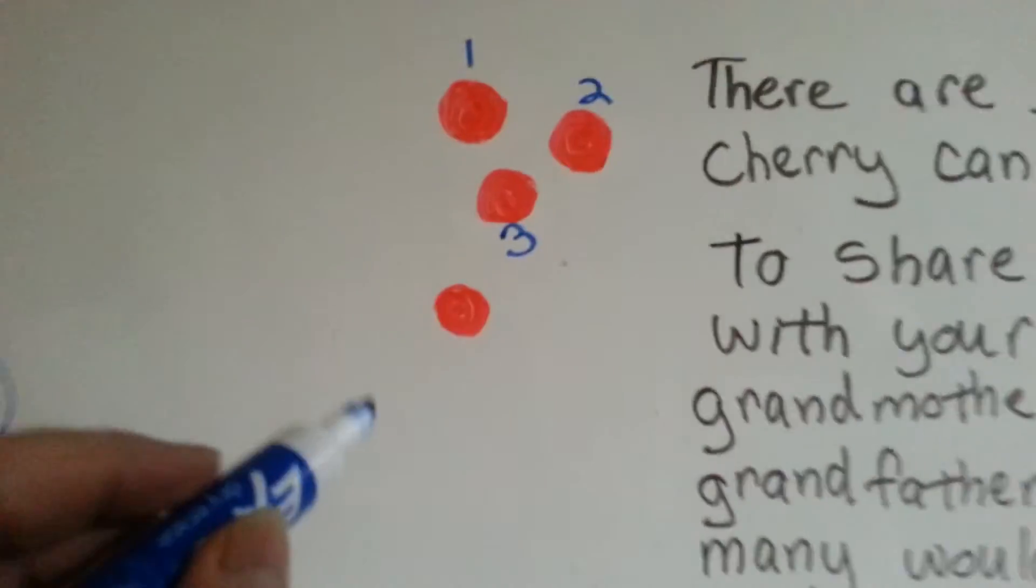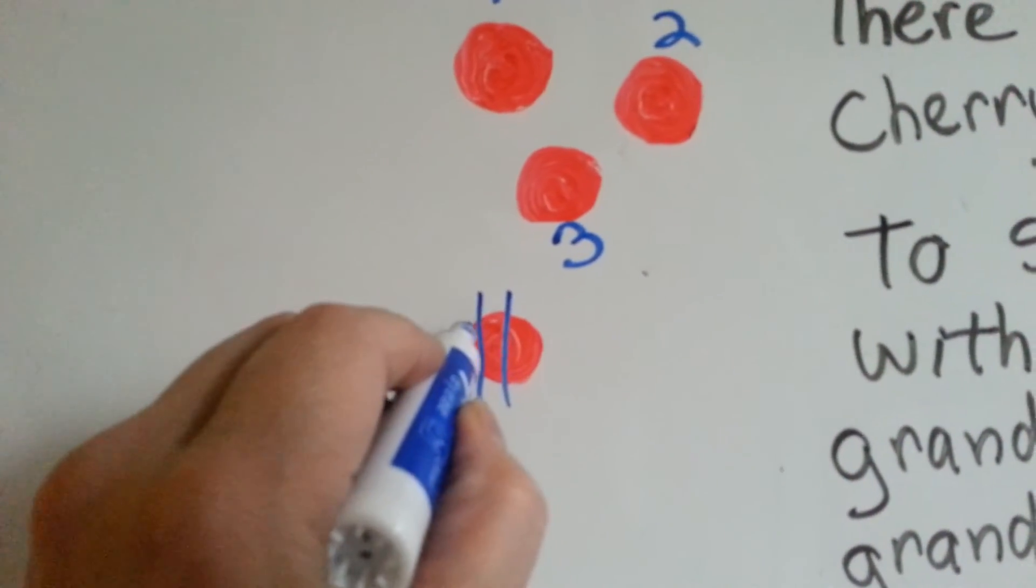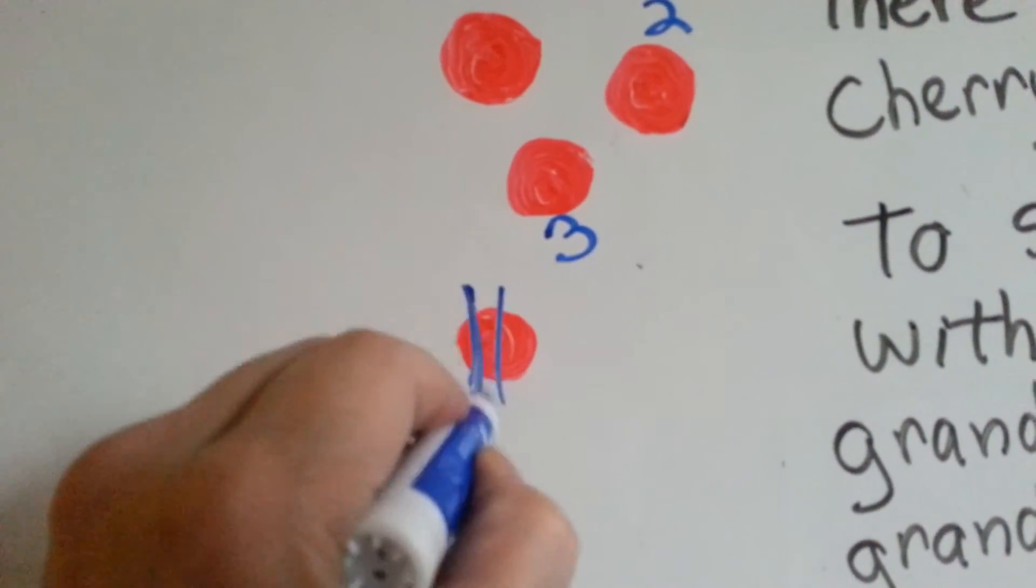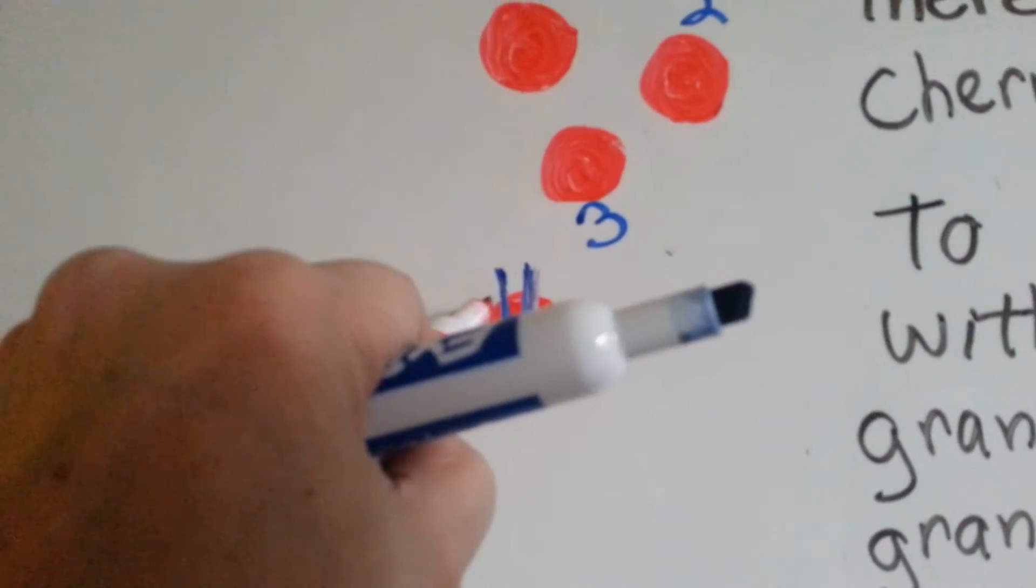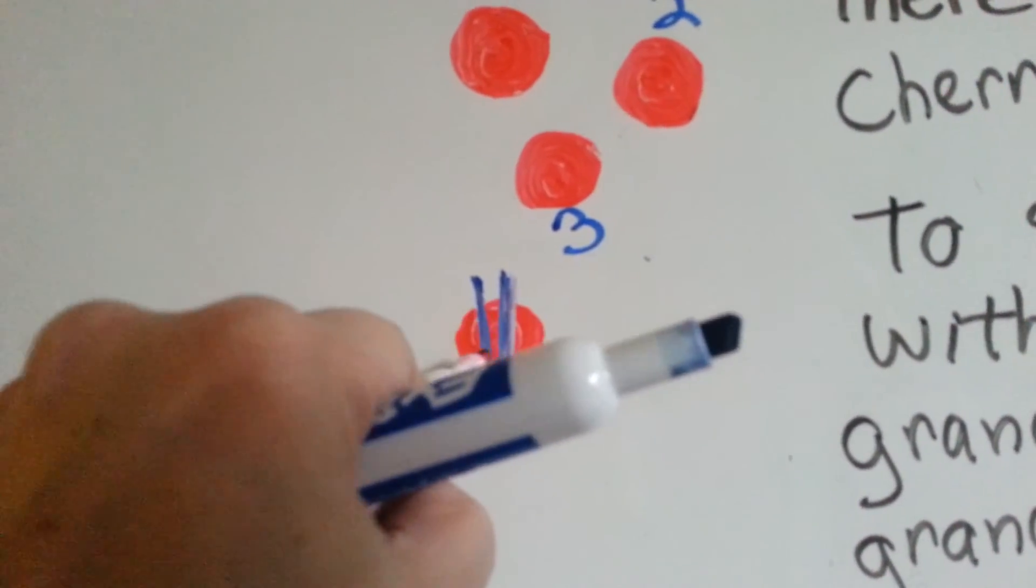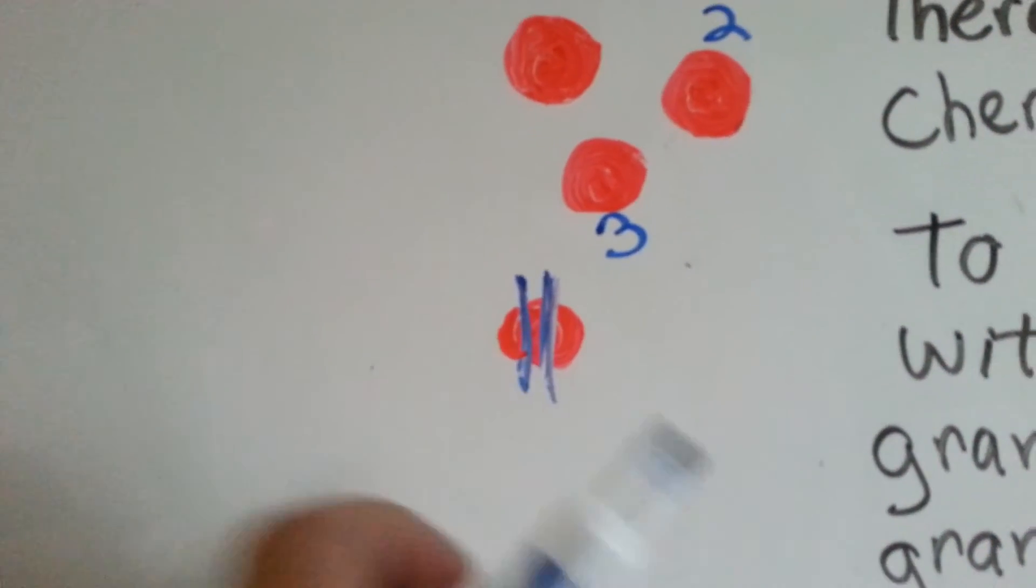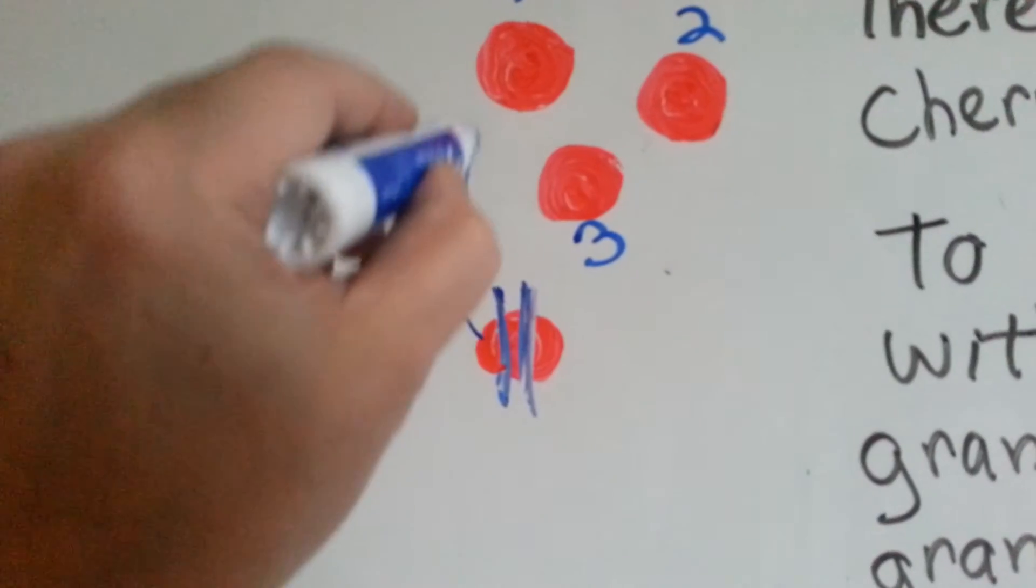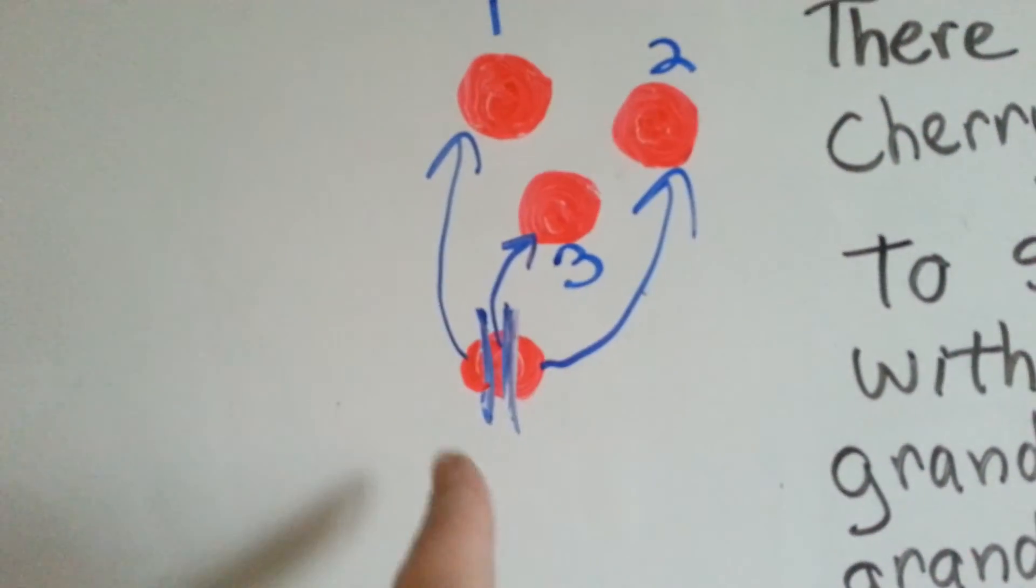Well, you know what you could do? You could cut this cherry candy into three pieces. Let's try to make it look like it's fair here, because we said it's equal, right? You could cut this one piece of cherry candy into three equal pieces, and each person could get a piece of that candy.